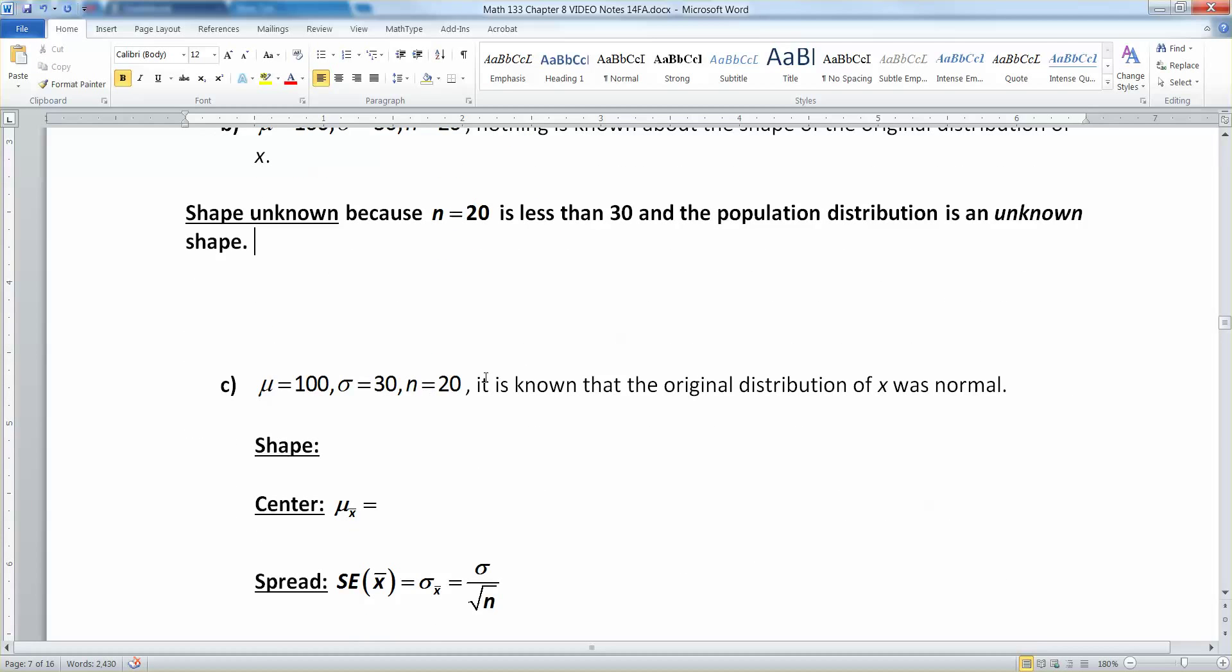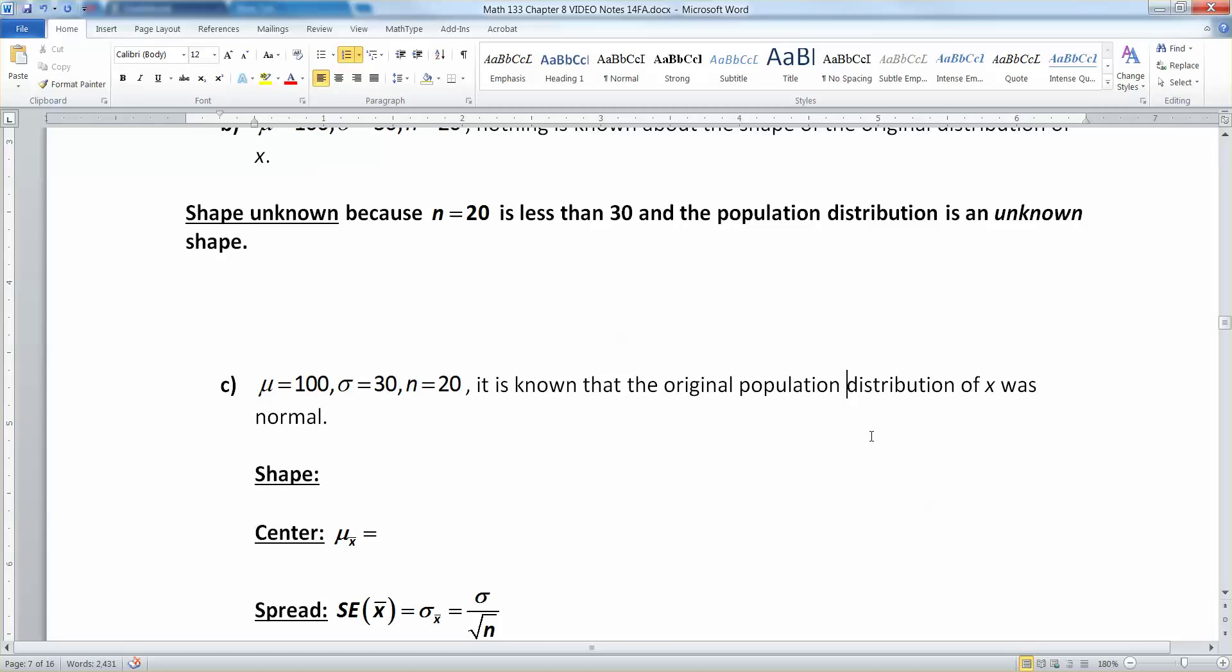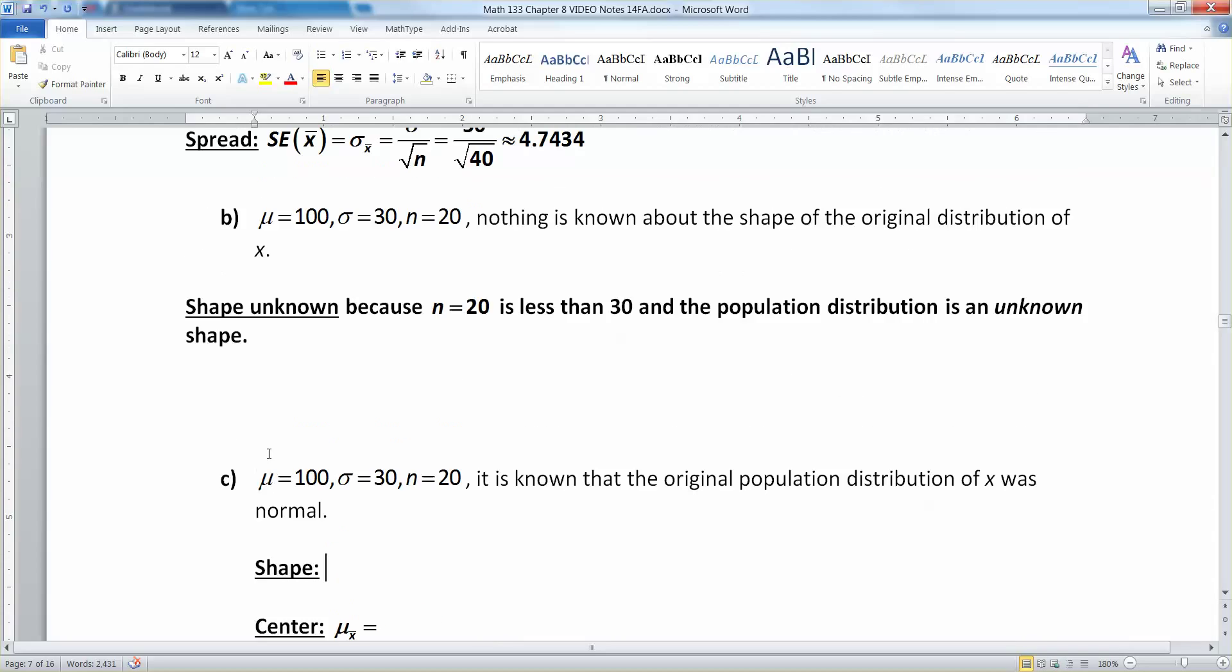Let's look at this one for C. It still has 100, 30, and 20, so you might think you're in trouble. But it is known that the original distribution of x was normal. Well, that's different. If you know that the original population distribution of x is normal, and that's what this is, this is an original population distribution of x is normal, then it's normal no matter what sample size you choose.